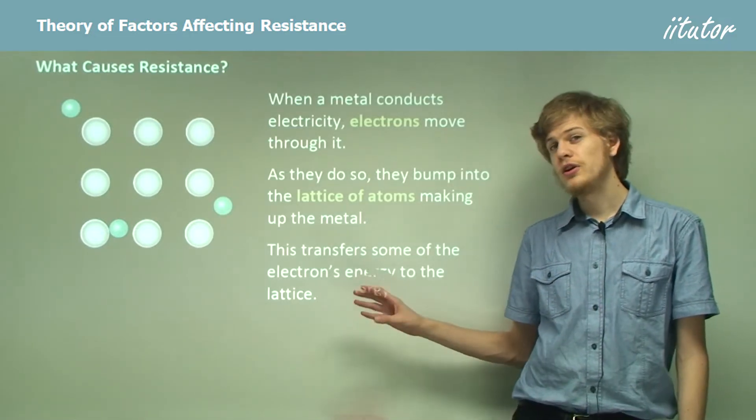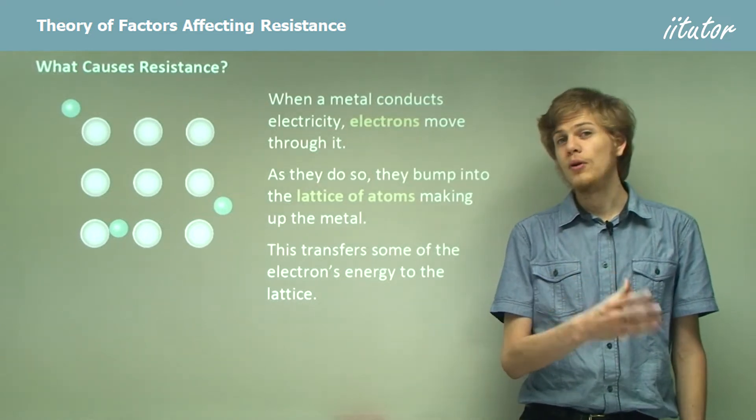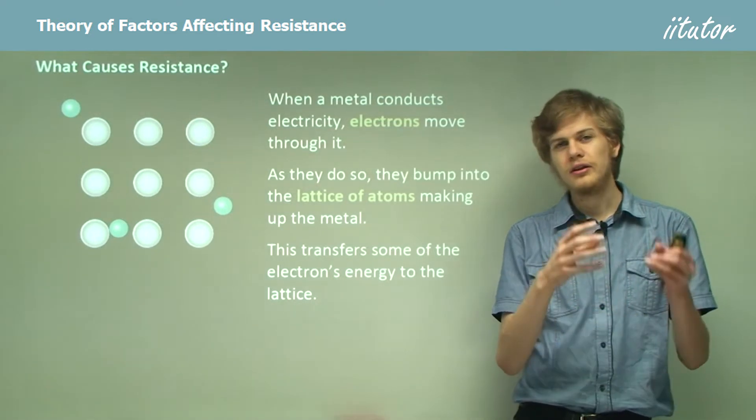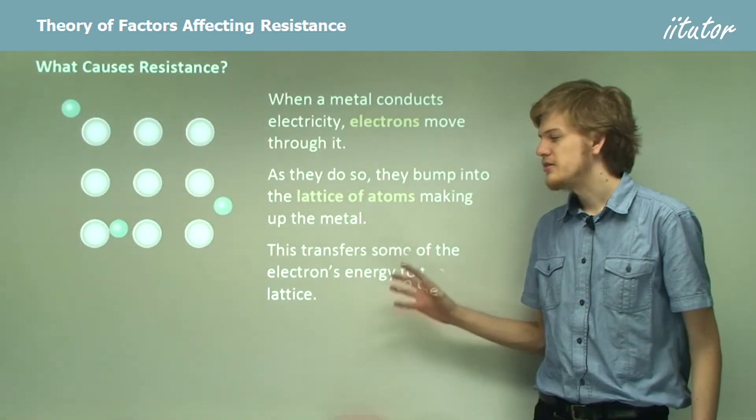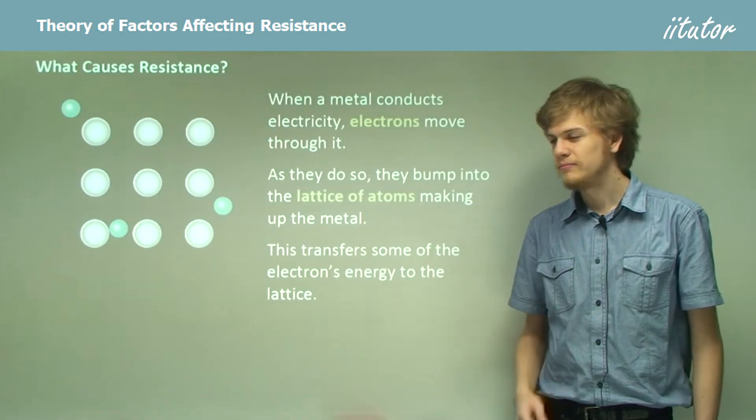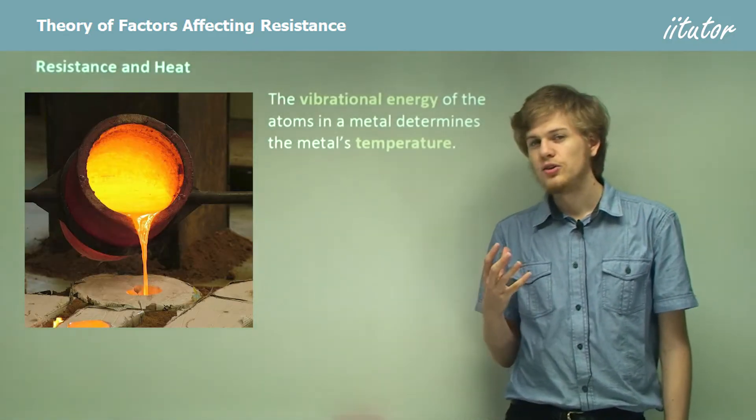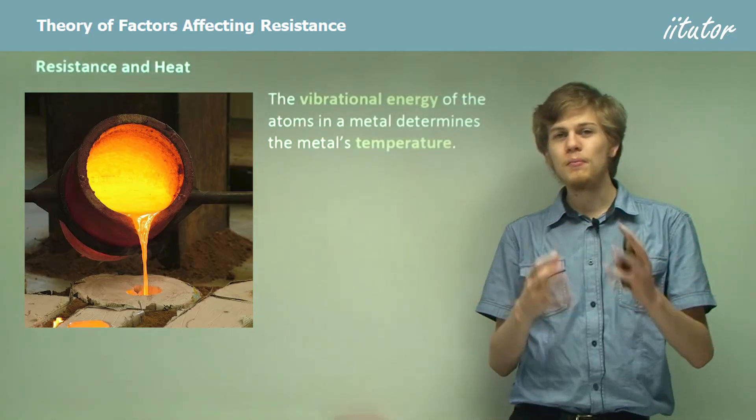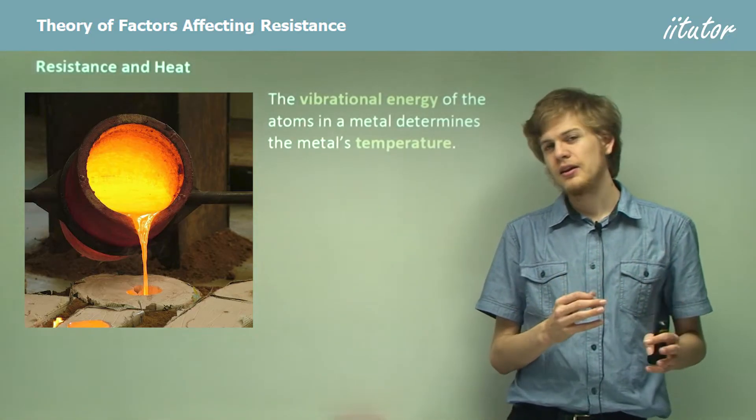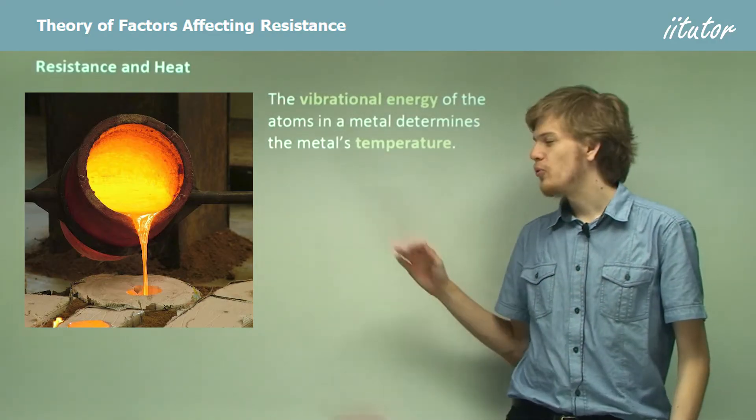So in this case we're transferring the kinetic energy of the electrons to the kinetic energy, or vibrational energy, of the lattice of atoms that make up the metal. A lattice is like a repeating grid. Now the vibrational energy of atoms in a metal determines the metal's temperature. So the more the electrons bump into the metal lattice, and the more the atoms in that lattice vibrate, the hotter we're going to get.